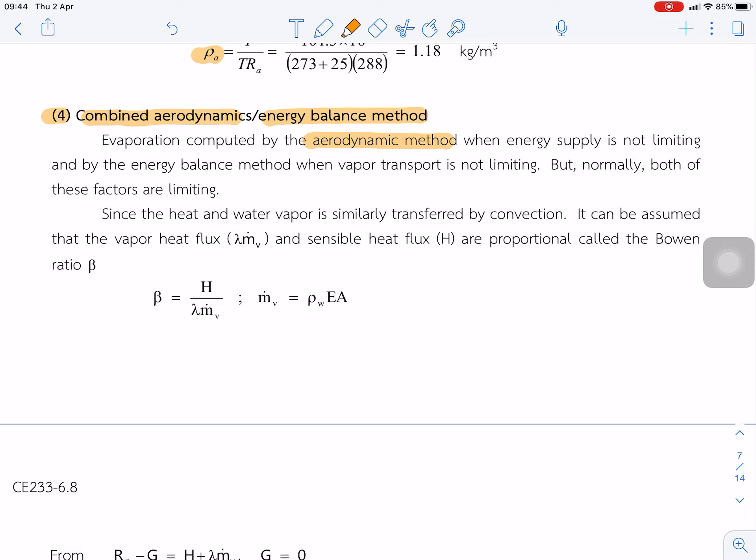But by the energy balance method, we assume that the vapor transport is not limited. But normally both factors are limiting. So we have to combine together to find the evaporation.